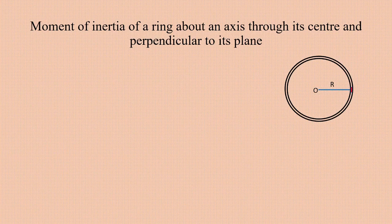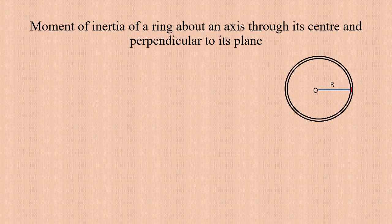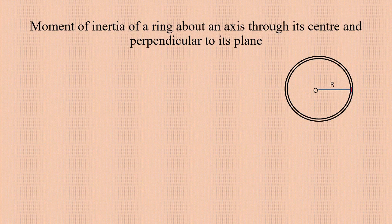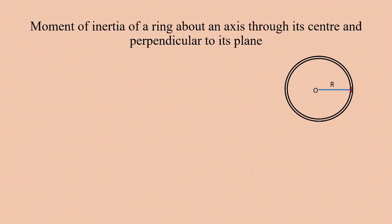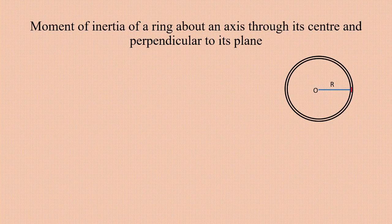We are going to find the moment of inertia of this ring about an axis passing through the center O and perpendicular to this plane — that means the axis is directed towards you, perpendicular to the surface. The mass of the ring is M and the radius is R.